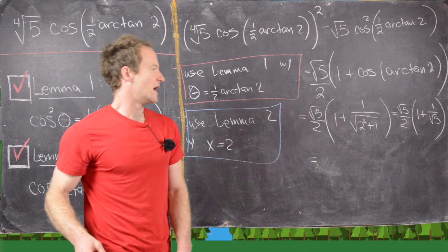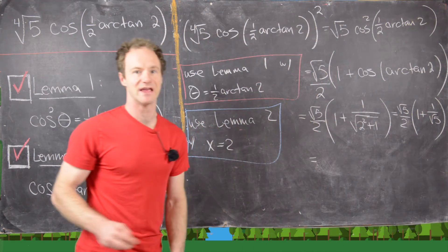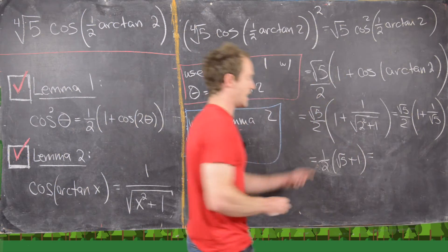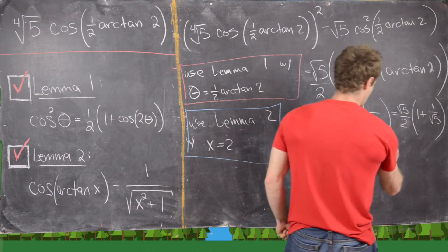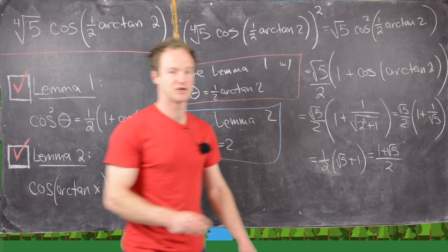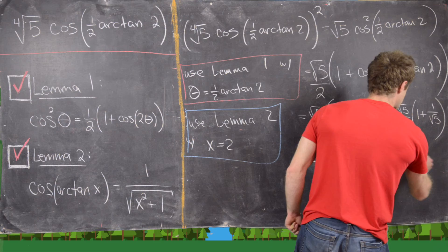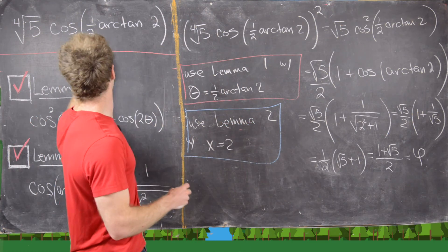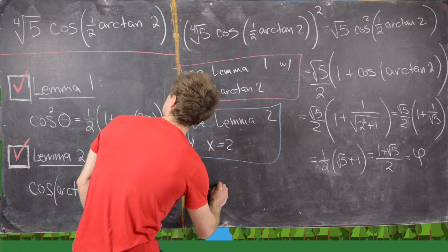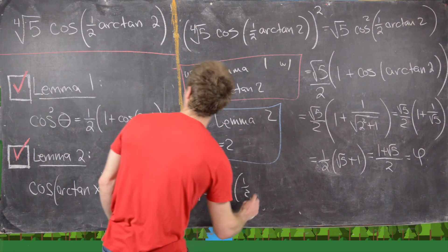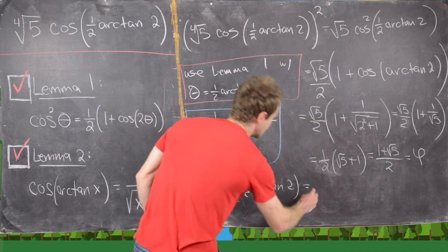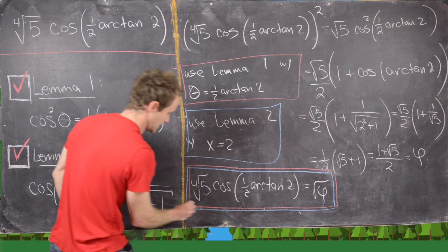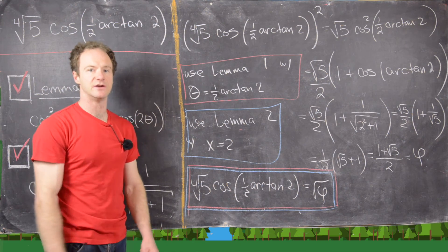Notice that simplifies as follows: multiplying the square root of five inside gives us one-half times (square root of five plus one), which can more traditionally be written as (1 + √5) over 2 — which is the golden ratio. So the square of our goal is the golden ratio, meaning the fourth root of five times cosine of one-half arctan of two equals the square root of the golden ratio. That finishes the calculation and this video.